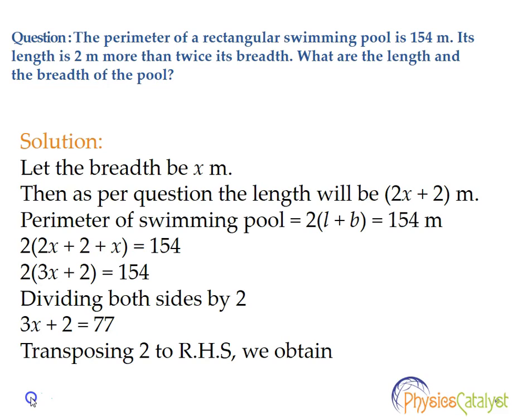Here the unknowns are length and breadth. The second step is to assume one unknown value as x. So let's assume breadth equals x meters. Then as per the question, the length would be 2x + 2 meters. It is given that the perimeter of the swimming pool is 154 meters.